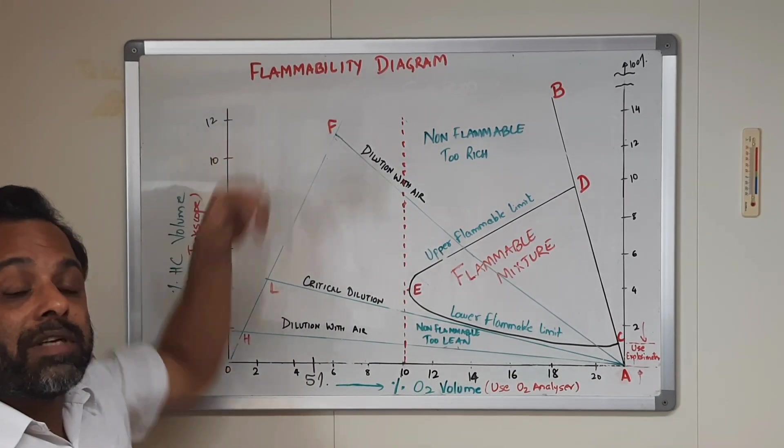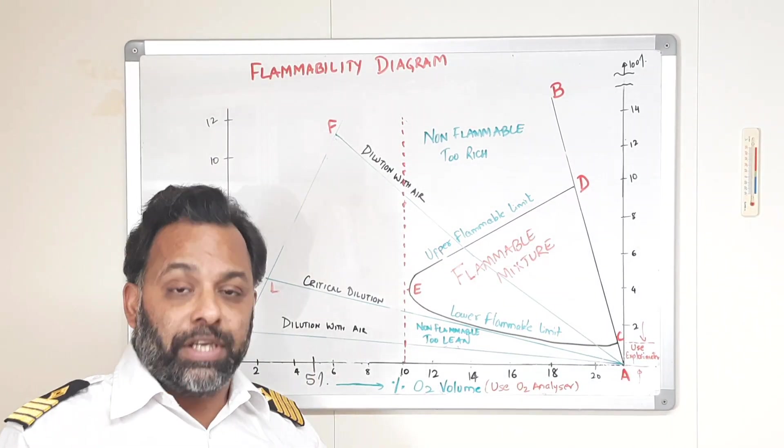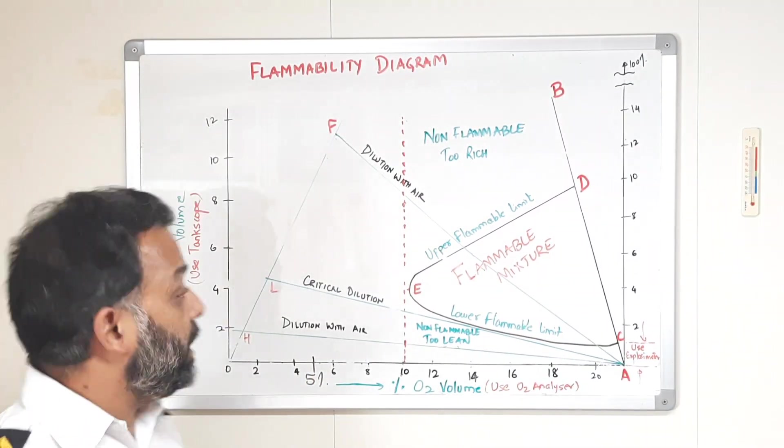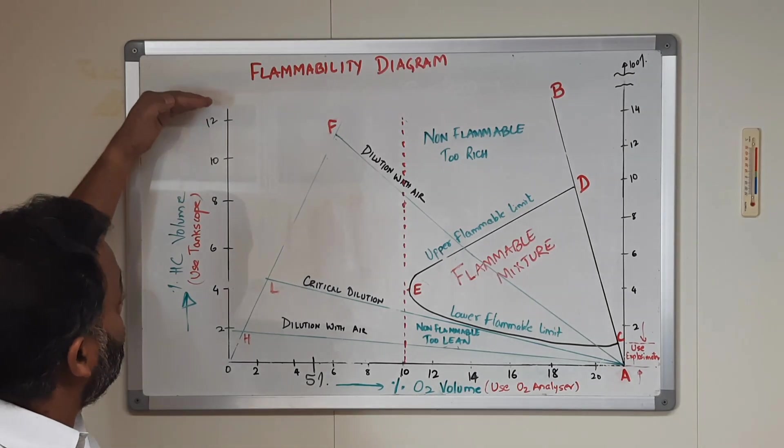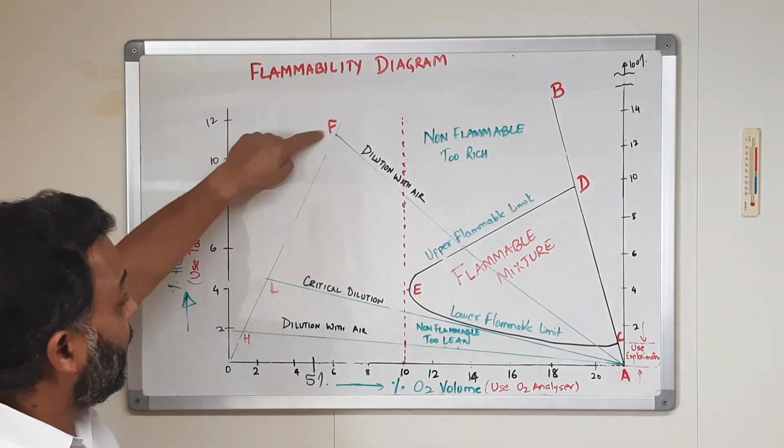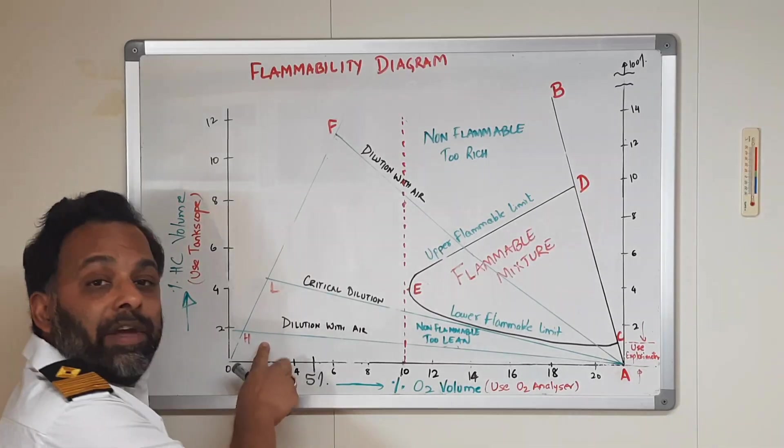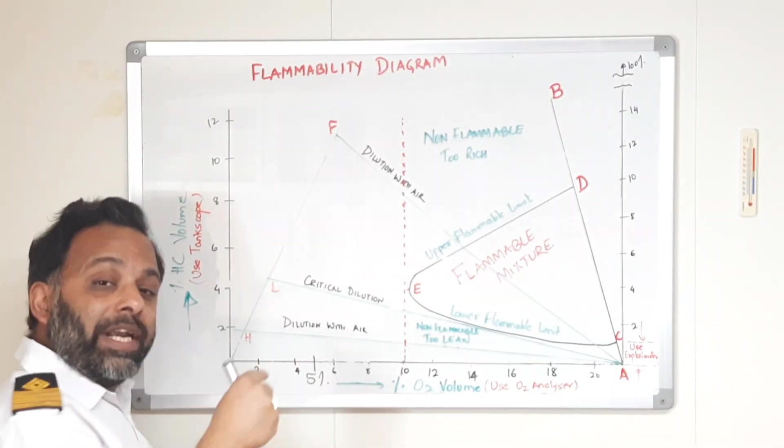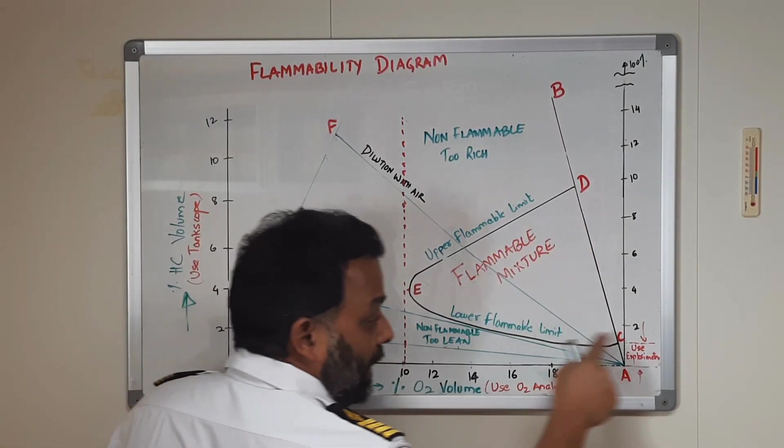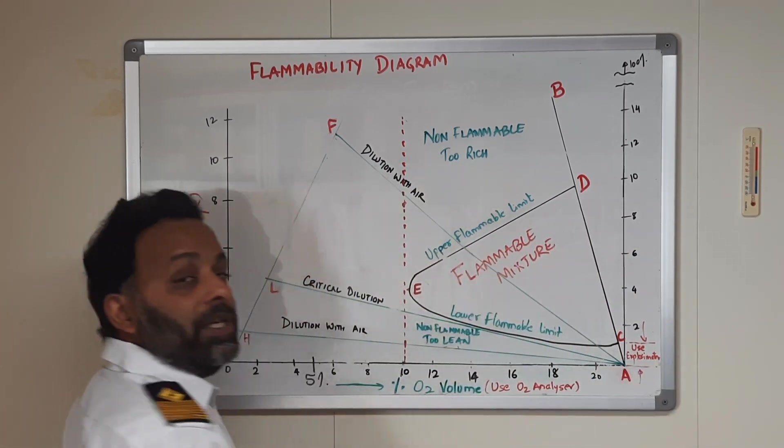What we do is, we start inerting the tank, we call it purging, we purge the tank with more IG and remove this hydrocarbon, lower this hydrocarbon level. We come from here until here. And then, we put fresh air so that even when it is going down, it is well clear of this flammable mixture region.